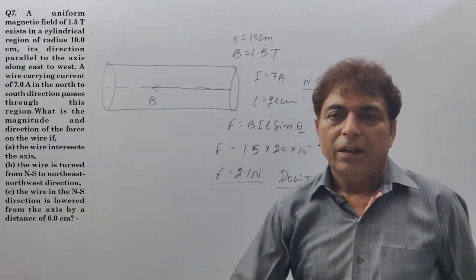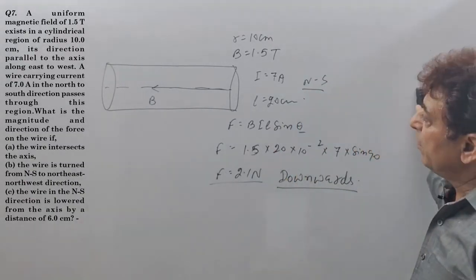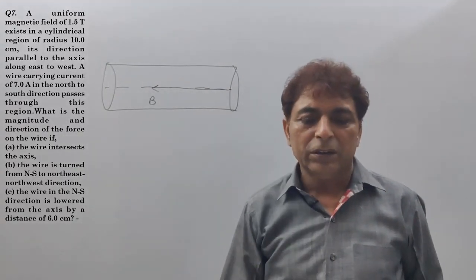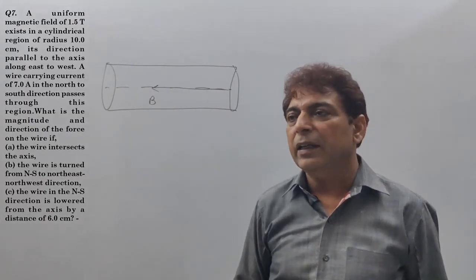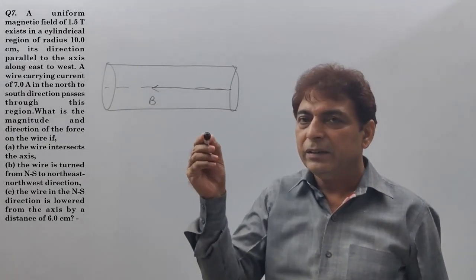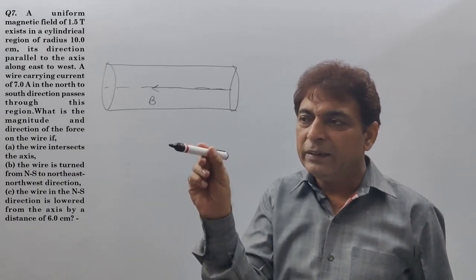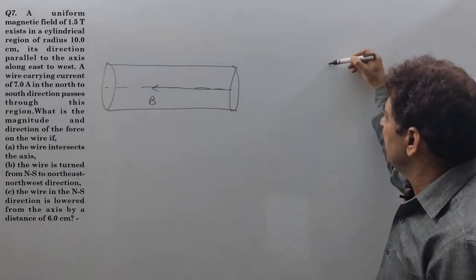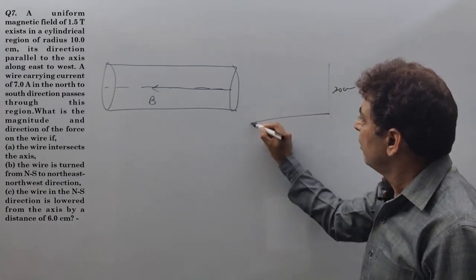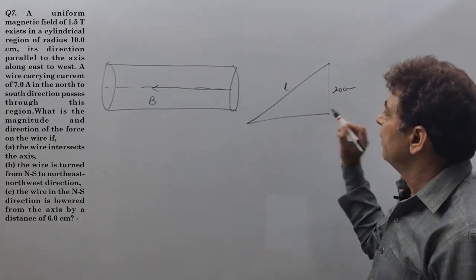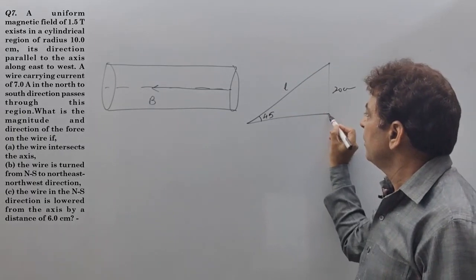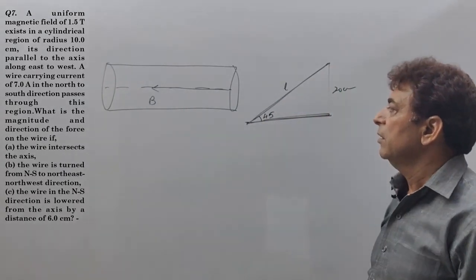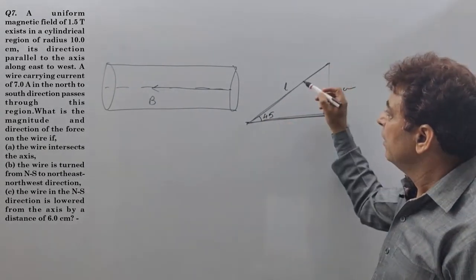Now the second part. The wire is turned from north-south to northeast. The wire is like north-south. Now it is like northeast. This is 20 cm. The wire is like northeast. The angle is 45. This is north-east. This is east. This is north-east.